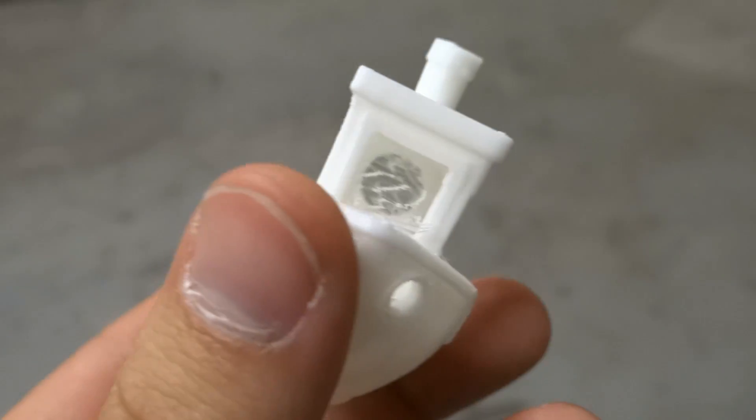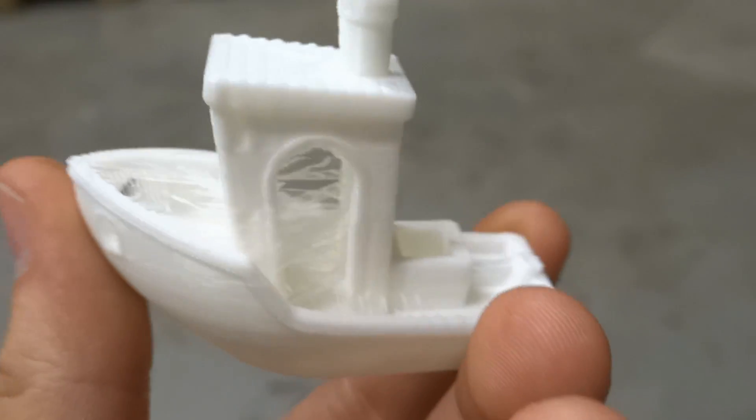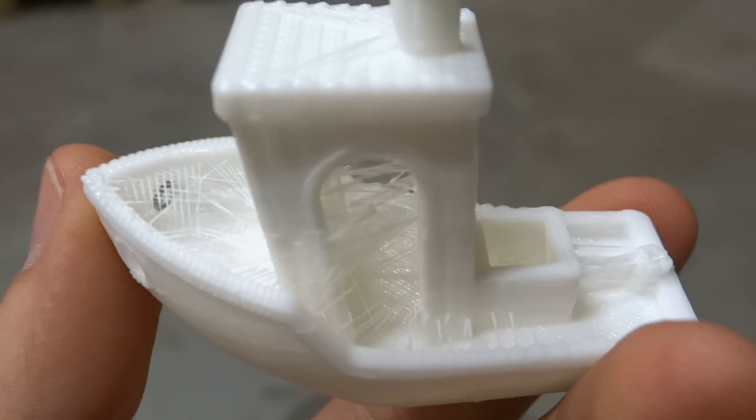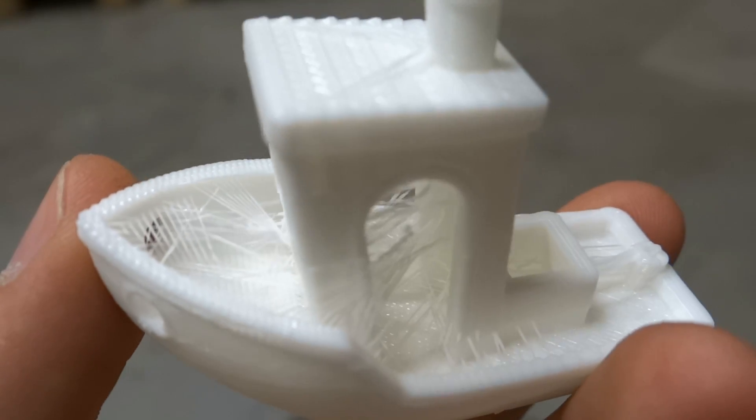It goes very well but retraction was too small and that's the reason why there are those strings of filament on it. It is easy to change that in slicer settings.